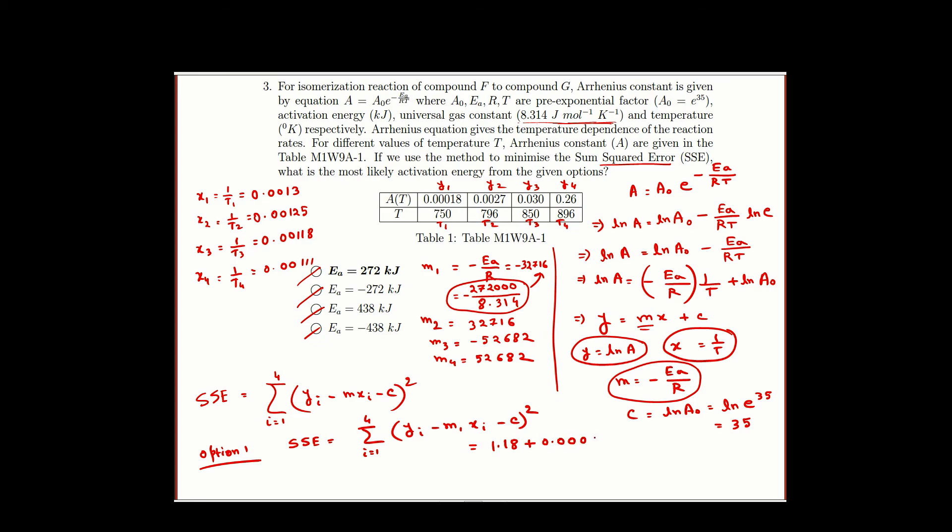If we calculate for the second option you will see the first term alone which is y1 minus m2 x1 minus c whole square, the first term alone will give you 7421 and there are 3 more terms and all these terms are positive because these are squared. So it is definitely greater than the first option.